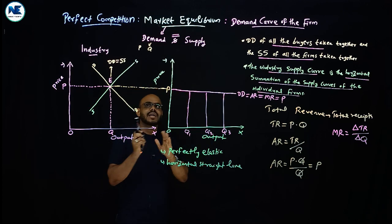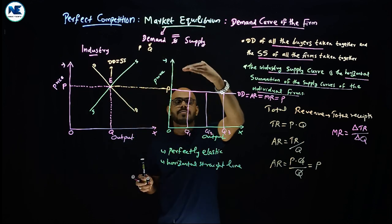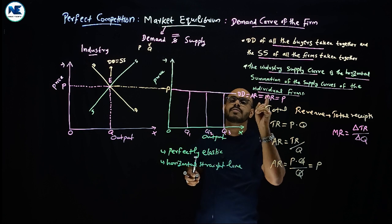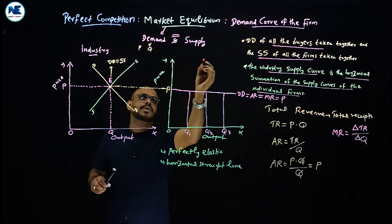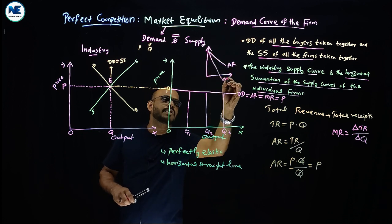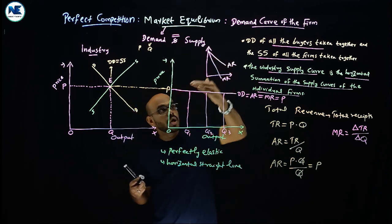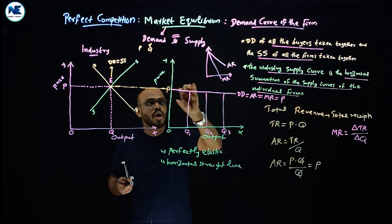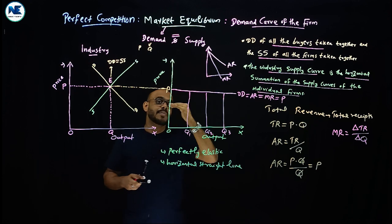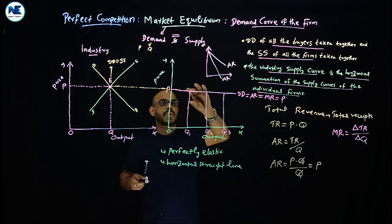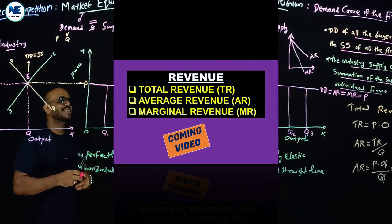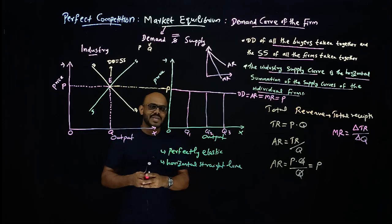So the three concepts are: average revenue which equals price, and marginal revenue which is the change in total revenue divided by change in Q. These are simple but very important. We have covered industry equilibrium, the firm's demand curve, and the individual demand curve. Under perfect competition, average revenue equals marginal revenue equals price — the demand curve and both revenue curves are all horizontal straight lines, representing perfectly elastic demand. In the coming video we will discuss total revenue, average revenue, and marginal revenue in detail. Thank you.